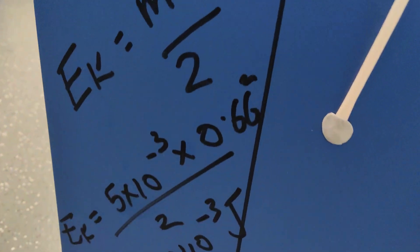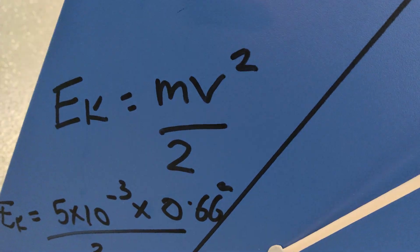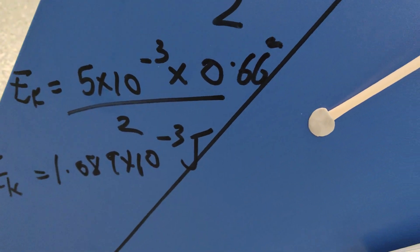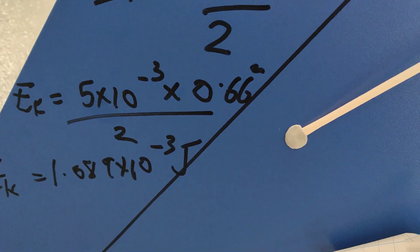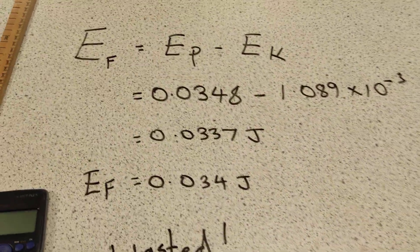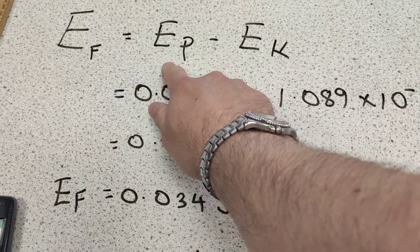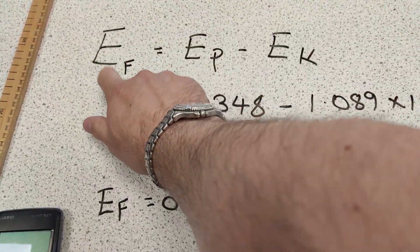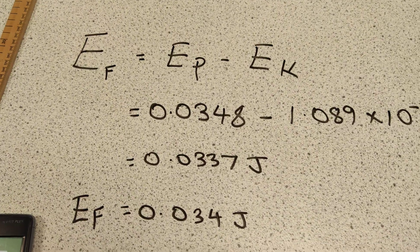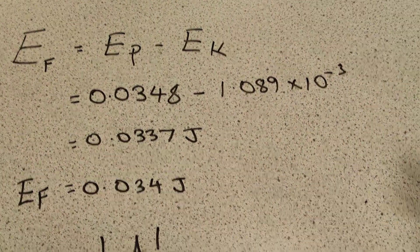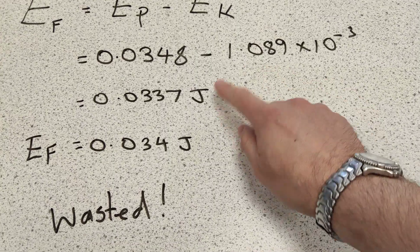If I then work out kinetic energy, which is mv²/2, I get 5×10⁻³ times 0.66 squared over two, which gives me my kinetic energy. Now the final step — if I start with potential energy and some of it goes into kinetic energy, what's left over must be my energy wasted in frictional stores, or thermal stores that's gone into the surroundings, the marble, or the track.